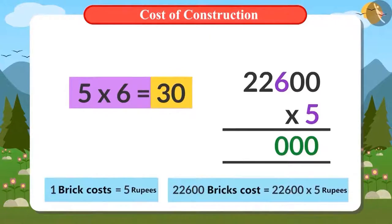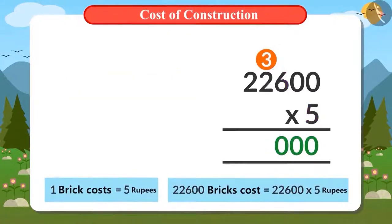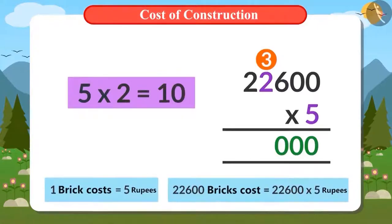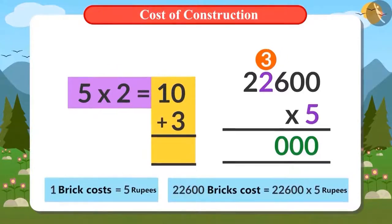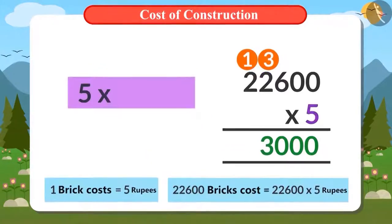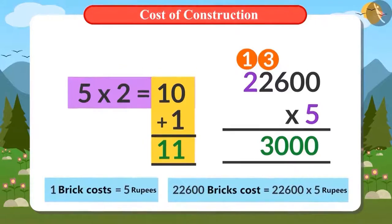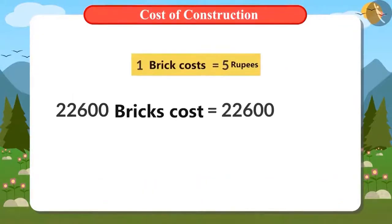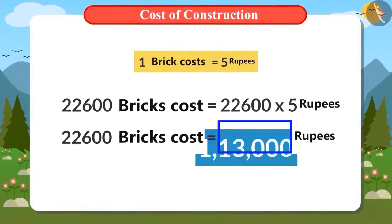30 has 0 at the 1's place and 3 at the 10's place. While multiplying, we place the 1's digit at the designated place and the 10's digit is taken as a carryover. Now we will multiply 5 by 2. The answer comes to 10. But we already have 3, so we add 10 and 3. The answer is 13. Again we multiply 5 by 2. The answer comes to 10. But we already have 1, so we add 10 and 1. The answer is 11. So we write the answer as 11. Now we get the answer of multiplying 22,600 by 5.